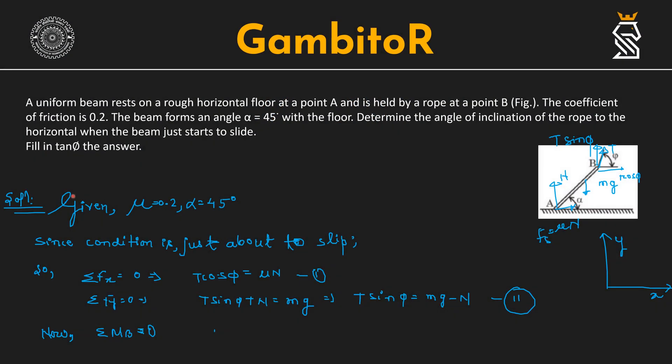Hello guys, today we are recording for the Gambitor Ethanol series. Here is our first question: A uniform beam rests on a rough horizontal floor at point A and is held by a rope at point B. The coefficient of friction is 0.2. The beam forms an angle alpha equal to 45 degrees with the floor.